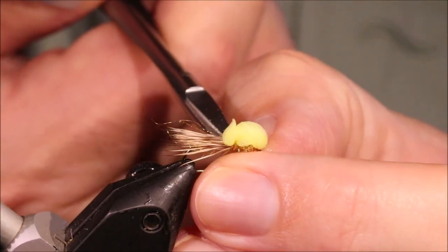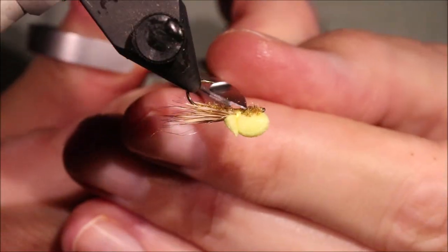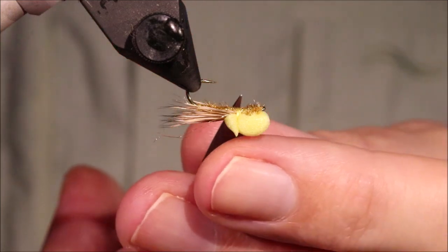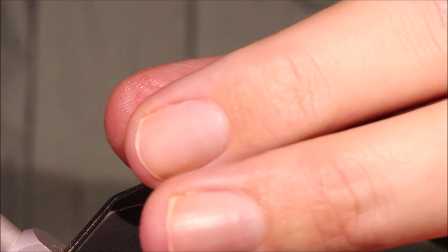As I say, it was really designed as an emerger, although you can fish it dry as a skater. Or hang a small nymph behind it. Or a diving caddis pattern behind it. But it's a great wee fly. Really, really works well.